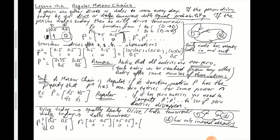No matter how many times you raise the power of P, the last row is always [0, 1]. You always have a zero entry, which means this Markov chain is not regular.